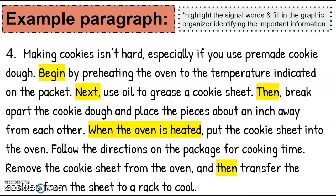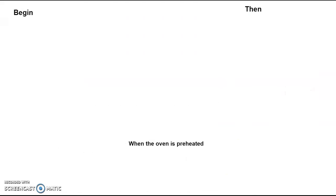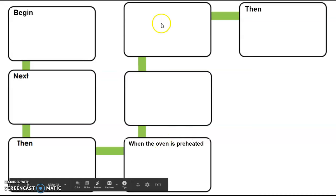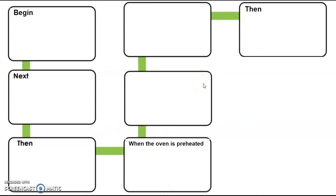So we're going to make our graphic organizer. Because this was steps, I decided to use a little flowchart here. And you can see I transferred the signal words that I found. And we had a couple of steps here that didn't have a signal word and that's okay.